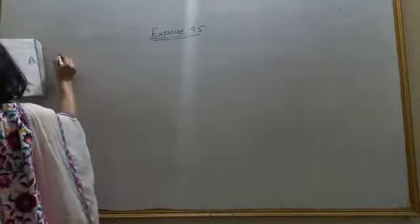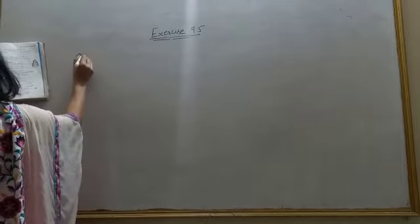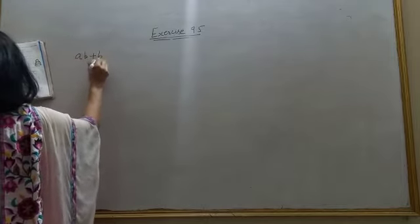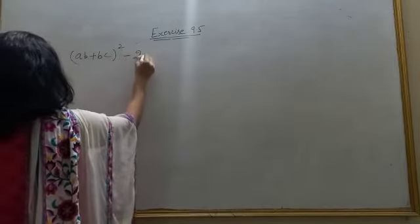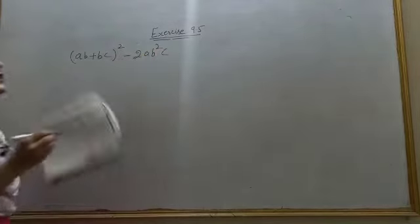Students, now 6th part of 4th question is AB plus BC whole square minus 2AB square C.